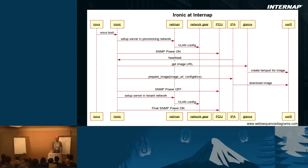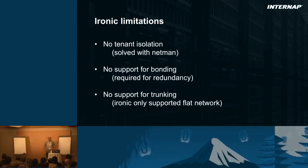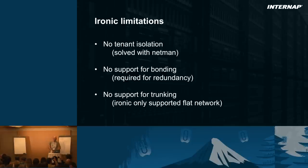We achieve our goal of provisioning tenant-isolated physical machines to customers. Doing this, we got stuck on a couple of limitations we had to overcome. Ironic initially did not have tenant isolation — we solved this with Netman. There's a talk at 3:40 regarding tenant isolation in Ironic; I want to see how they did it — pretty sure they didn't use Netman.